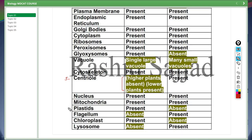We have plastids which are absent in animals but present in plants. Then we have flagellum. These are present in only animals and helps in movements. Plants do not move so flagella are absent in plants. Chloroplasts, which is responsible for the process of photosynthesis are only present in plants. Lastly, we have lysosomes which are only present in animal cells. Now move on to the next topic.